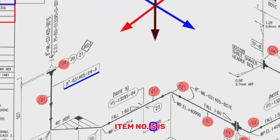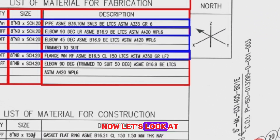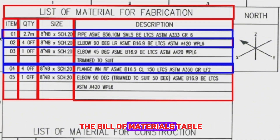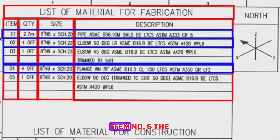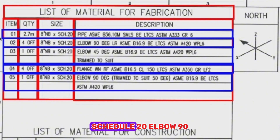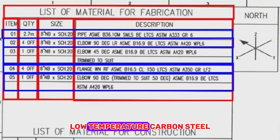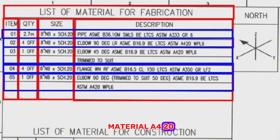Item number 5 is shown in one place on this pipe drawing. Looking at the Bill of Materials table: Item number 5, the quantity is 1 off, size 8 inches, schedule 20, elbow 90 degree, long-radius ASME, low-temperature carbon steel material, A420.